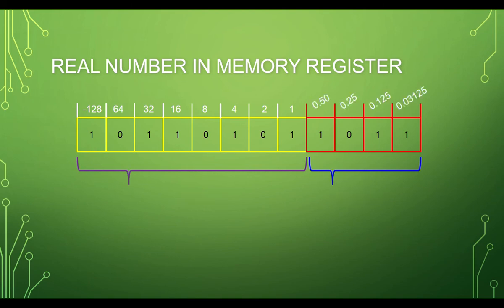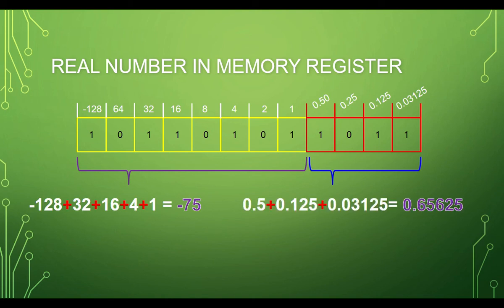We will only consider those numbers with 1. Starting from negative 128, followed by 32, 16, 4, and 1. For the fraction part, we have 0.5 plus 0.125 and 0.03125. Adding them together results in negative 75.65625.